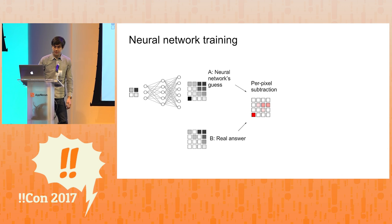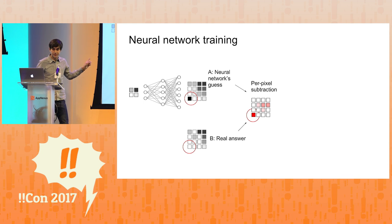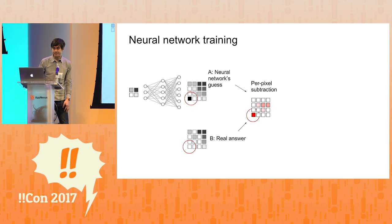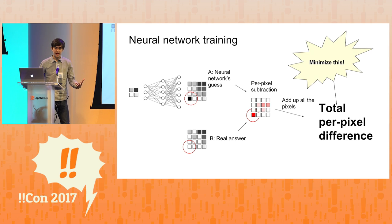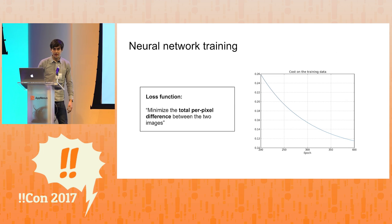Because we're in the training process, we actually have the real high-res version available as well. What we want to do is, on each iteration of training, make the neural network a little bit better at actually producing the real answer. So what we can do is a per-pixel subtraction between these two images and see where they're different. If we take the total per-pixel difference for the entire image, that gives us what's called our loss function, which is basically just what we're going to tell the neural network to try to minimize as we train it. If that difference goes to zero, that means our neural network is perfect at reproducing the real high-resolution image every single time. It's never going to get to zero, but we train for a while and it can get pretty low.